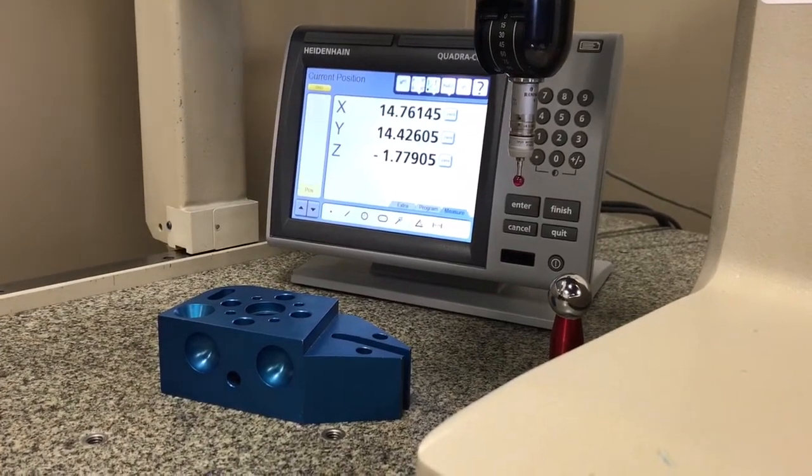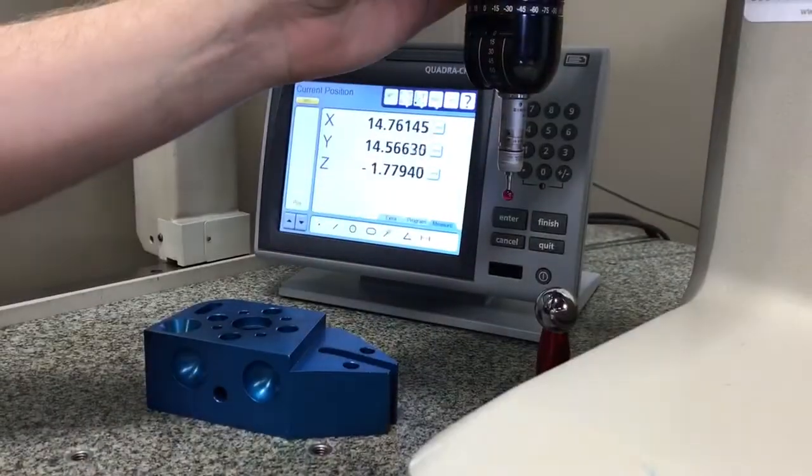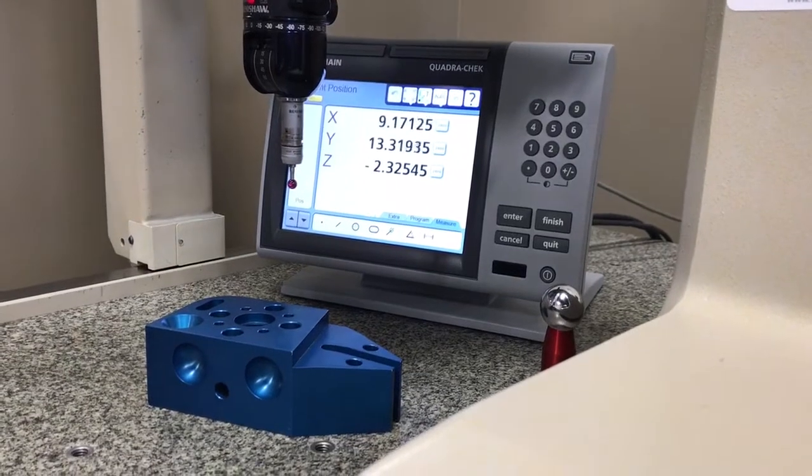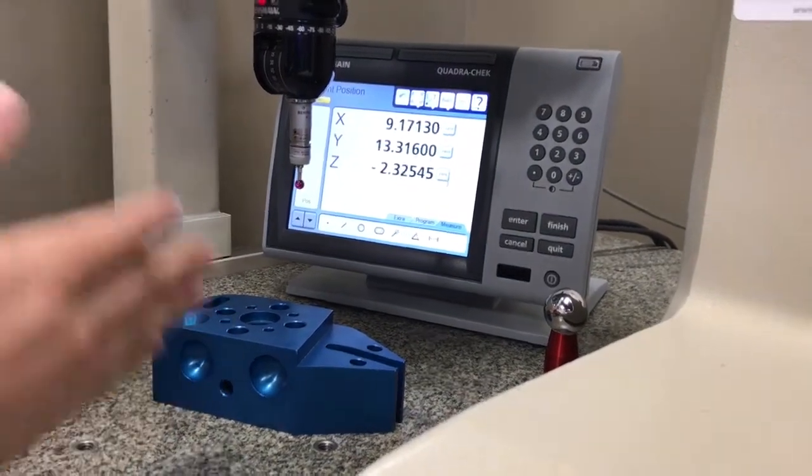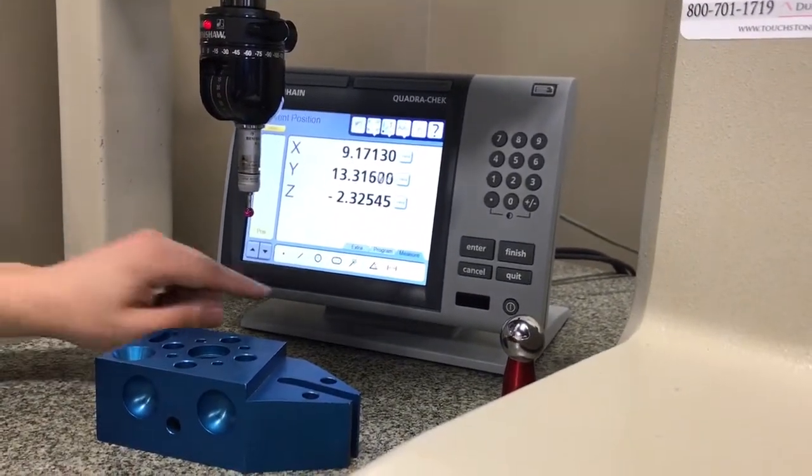I've already calibrated my tip so I can begin measuring parts. I want to establish my part coordinate system. First I want to level the part, so I'm going to measure a plane on this widget.